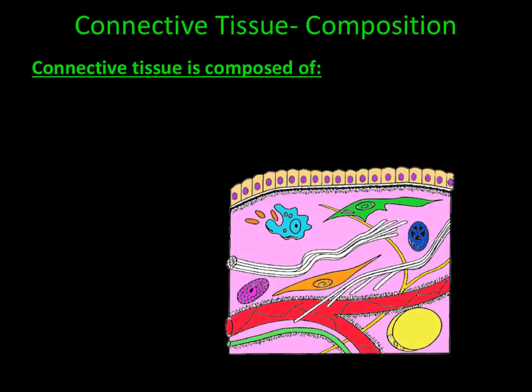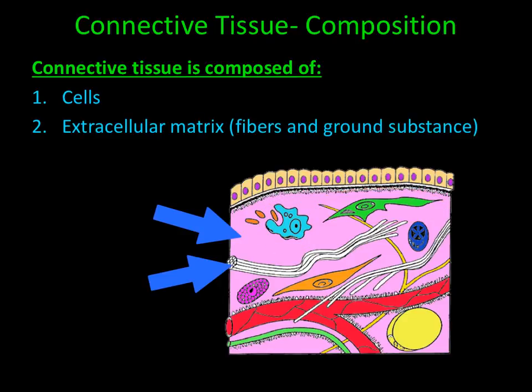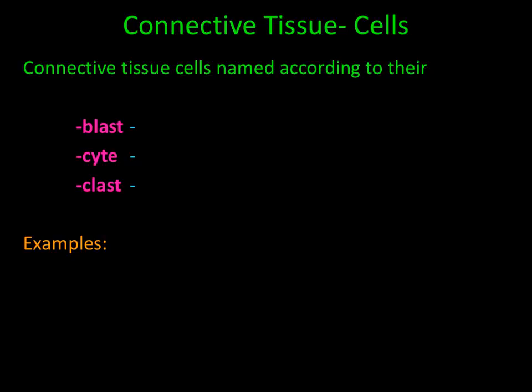Connective tissue is composed of two things. The first thing are cells, and the second is called extracellular matrix. So let's take a closer look at the different types of cells found in connective tissue.